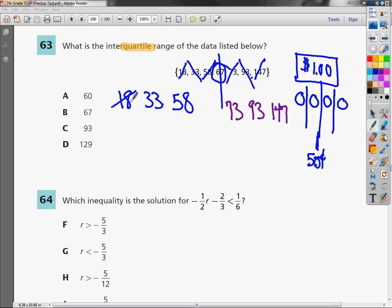On the left side, I get rid of 18 and 58, and what I'm left with is 33. On the right side, I get rid of 73, 147. What I'm left with is 93.